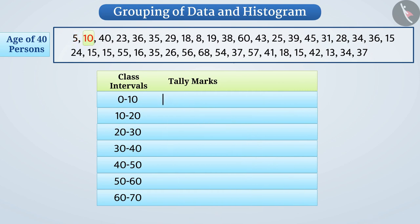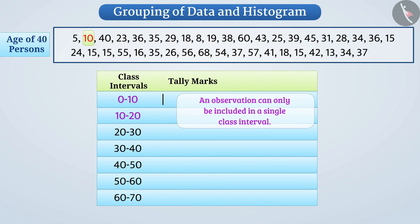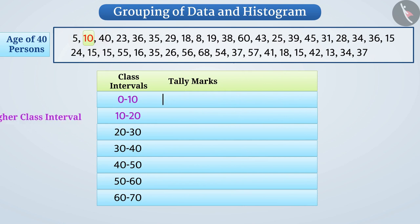Now let's talk about observation 10. We see that 10 is included in class interval 0 to 10 as well as 10 to 20. But an observation can only be included in a single class interval. To avoid this situation, we adopt a convention that a common observation will be presented in the higher class intervals. Here, we will include 10 in higher class interval 10 to 20 and create tally marks for it.